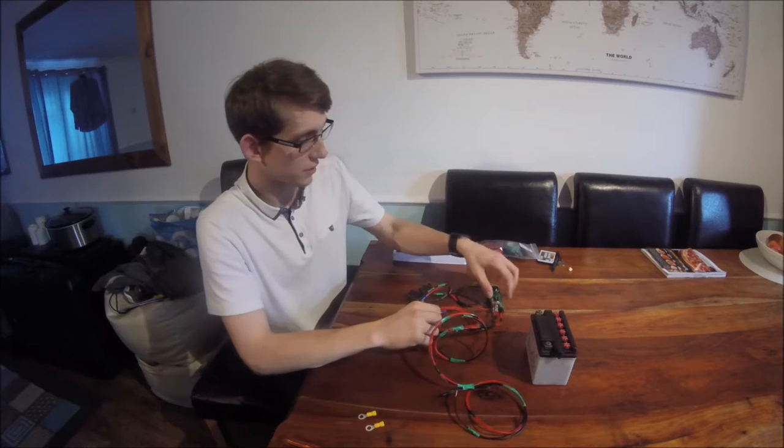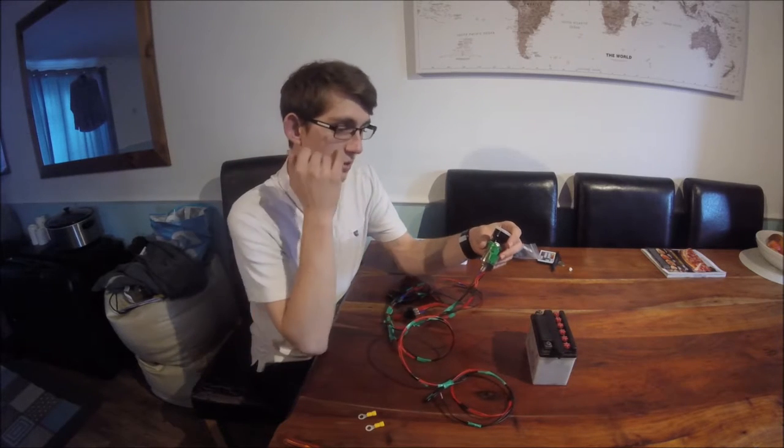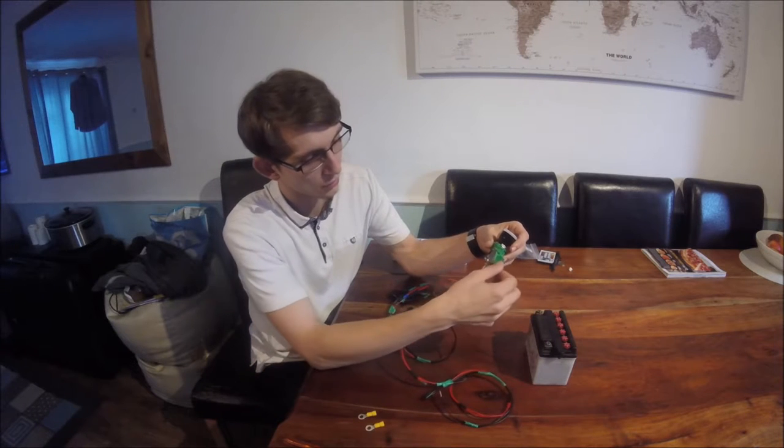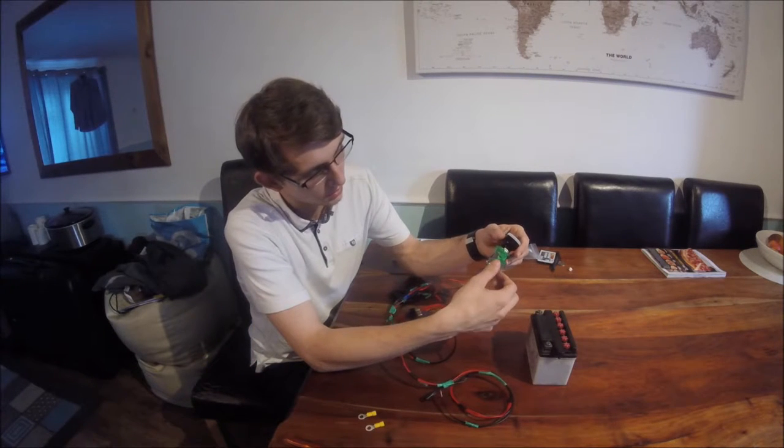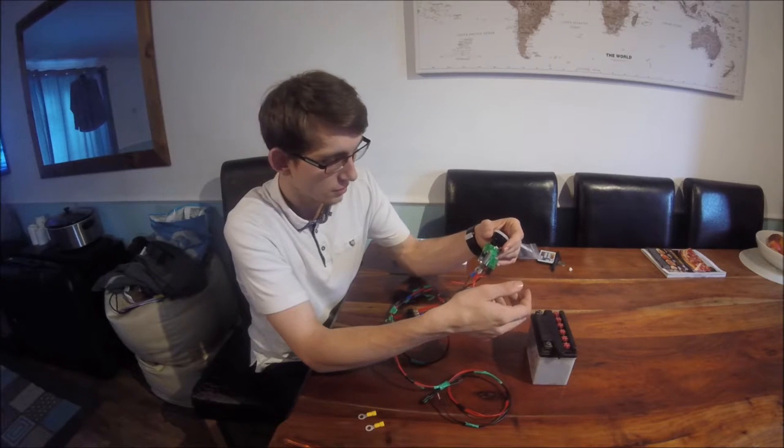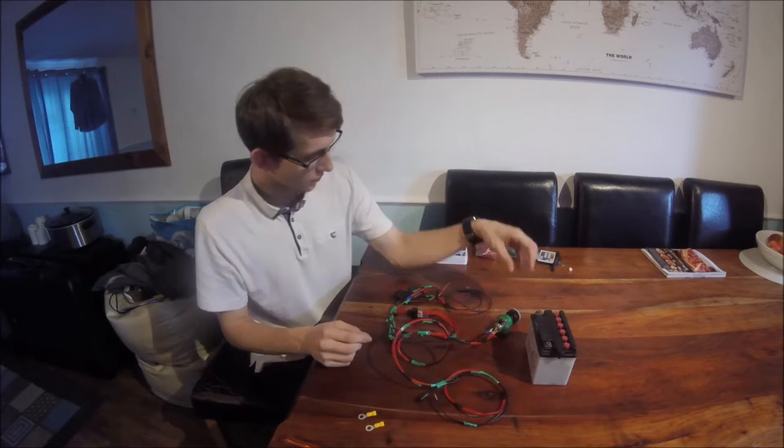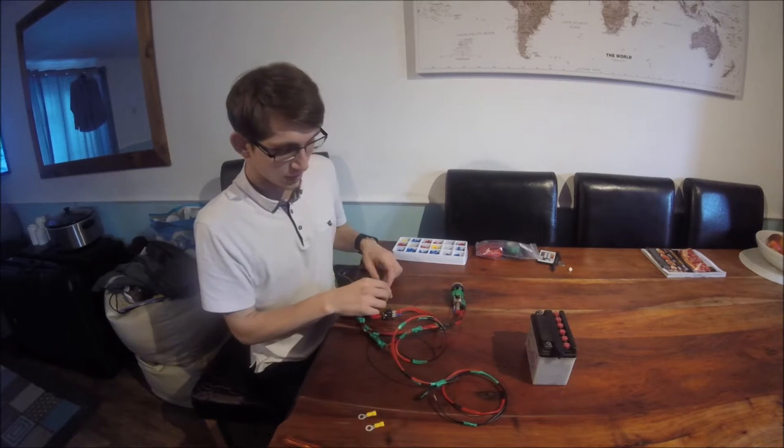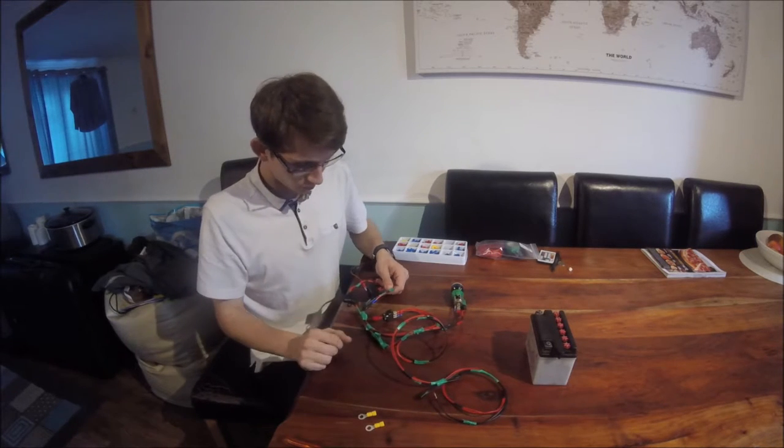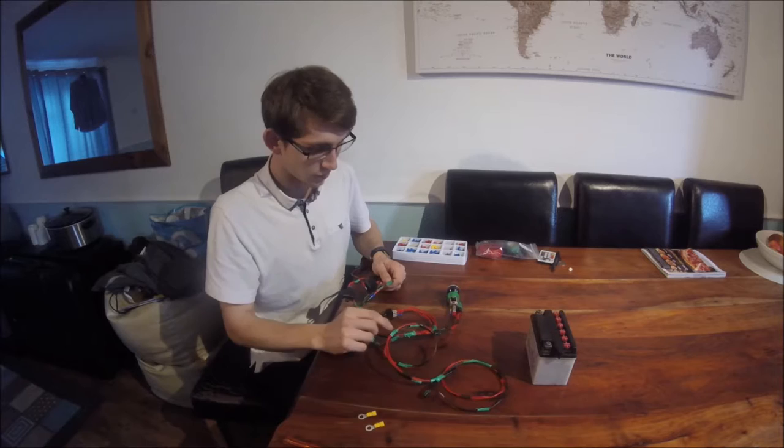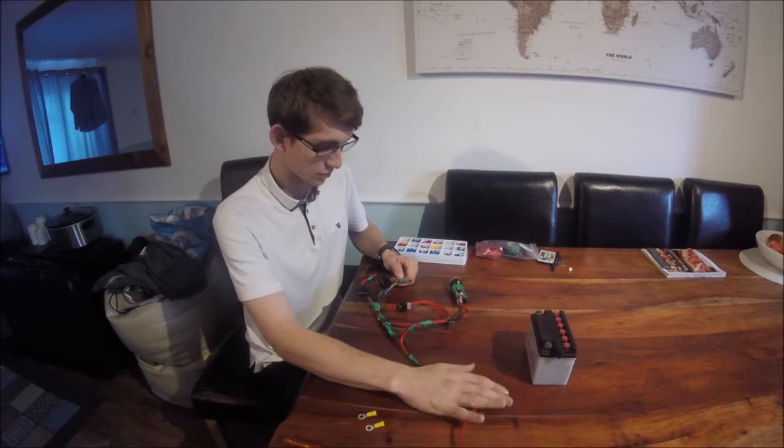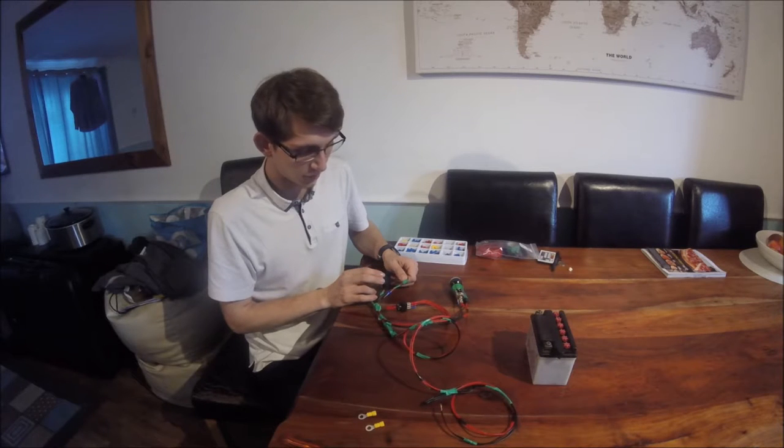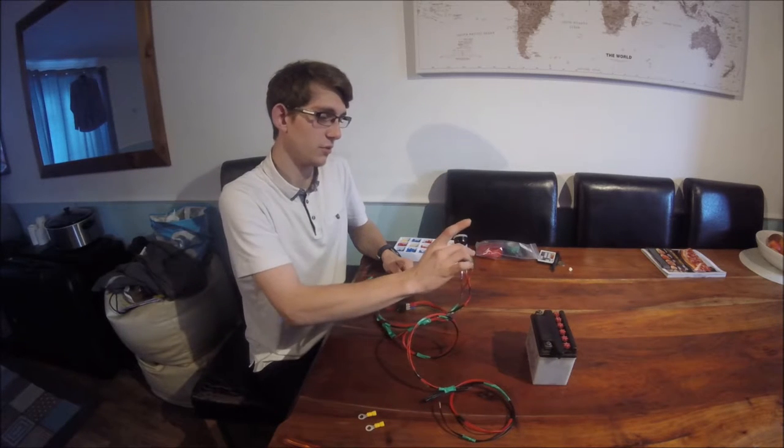So once you have the power coming up into this, you can have the power just joined for both, for the LED as well, because it will only draw what it needs to. Don't need to worry about this wiring here. The only thing that you need to make sure is that you have your wiring that goes from your accessory from the switch goes through into this blade fuse and then up into your socket.